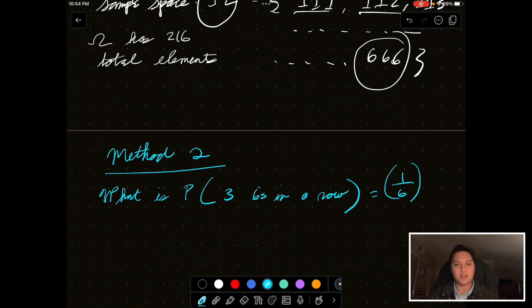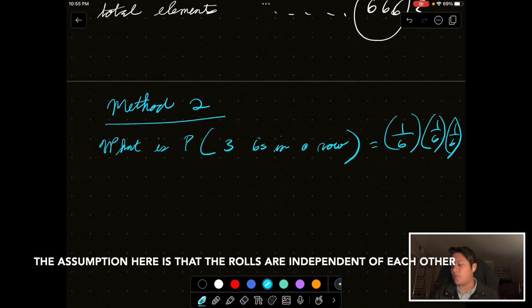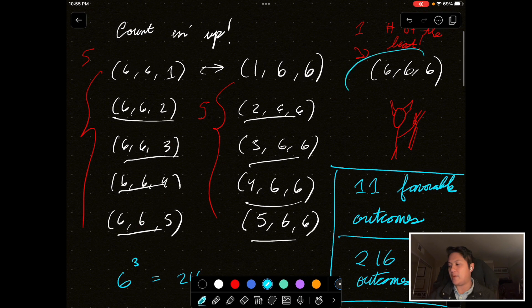So, this is the probability you get a six on the first roll, and then you roll it again. And so, that's another one sixth. And then you roll it again, and that's another one sixth. So, we have one over six, one over six, one over six.